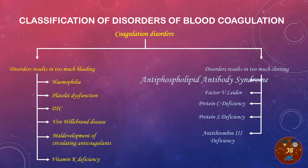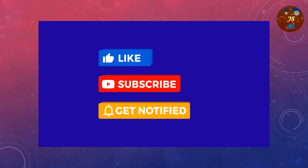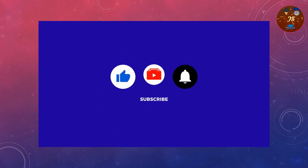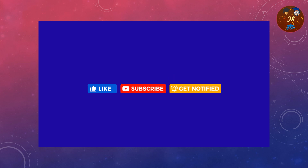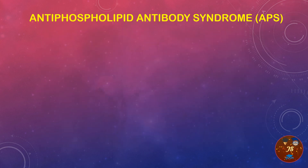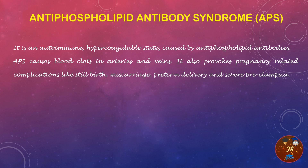Let's go to the tutorial. Antiphospholipid antibody syndrome, or APS, is an autoimmune hypercoagulable state — meaning the blood coagulates before the scheduled clotting time — caused by antiphospholipid antibodies.